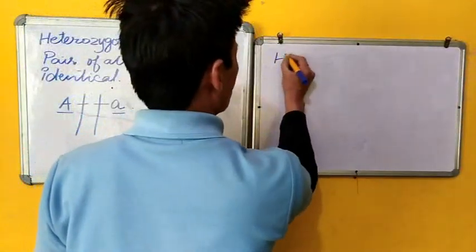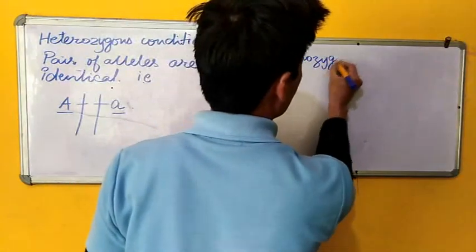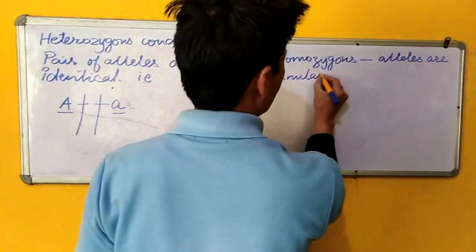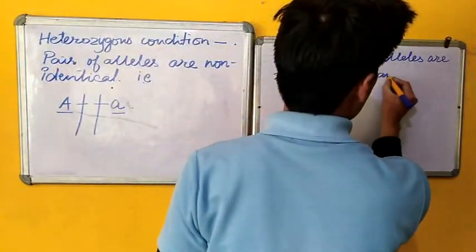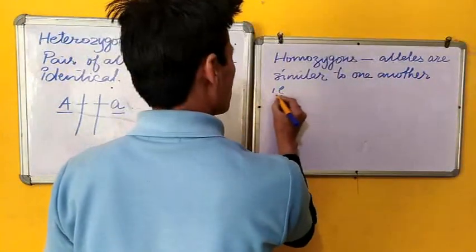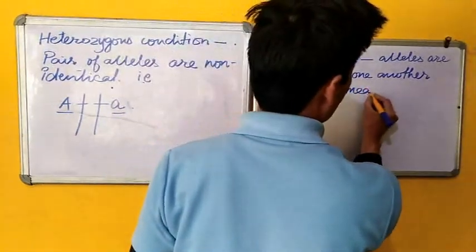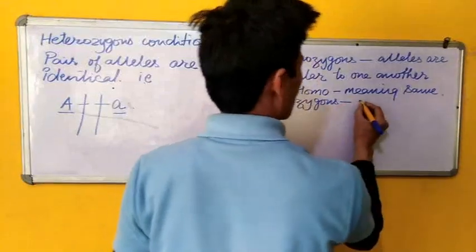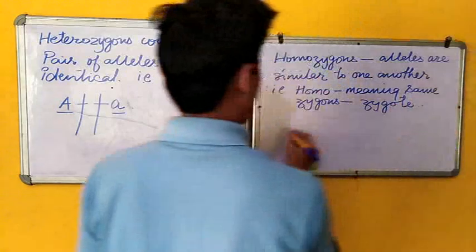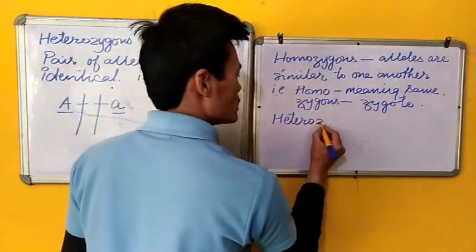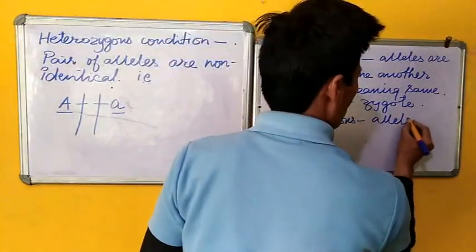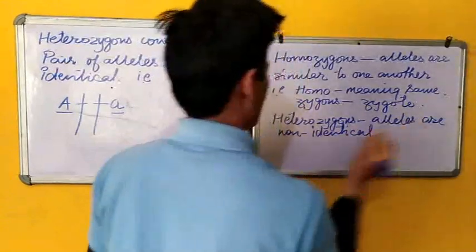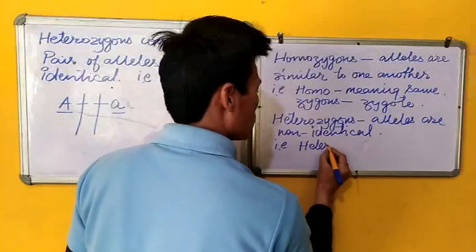So, now we can conclude that in a homozygous condition, alleles are similar to one another — that is, 'homo' meaning same, 'zygous' derived from the zygote condition. Likewise, heterozygous condition is a condition where the alleles are non-identical — that is, 'hetero' meaning different.